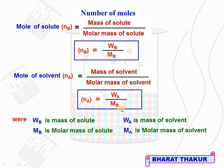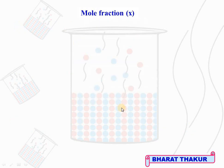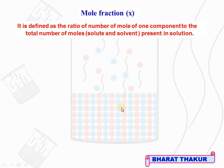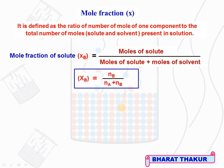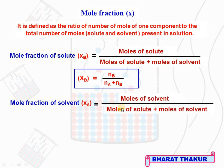Mole fraction, represented by capital X, is defined as the ratio of the number of moles of one component to the total number of moles (moles of solute plus moles of solvent) present in the solution. Mole fraction of solute XB = NB / (NA + NB), where NB is moles of solute and NA + NB is the total number of moles. The component whose mole fraction we want always goes in the numerator; total moles always go in the denominator.